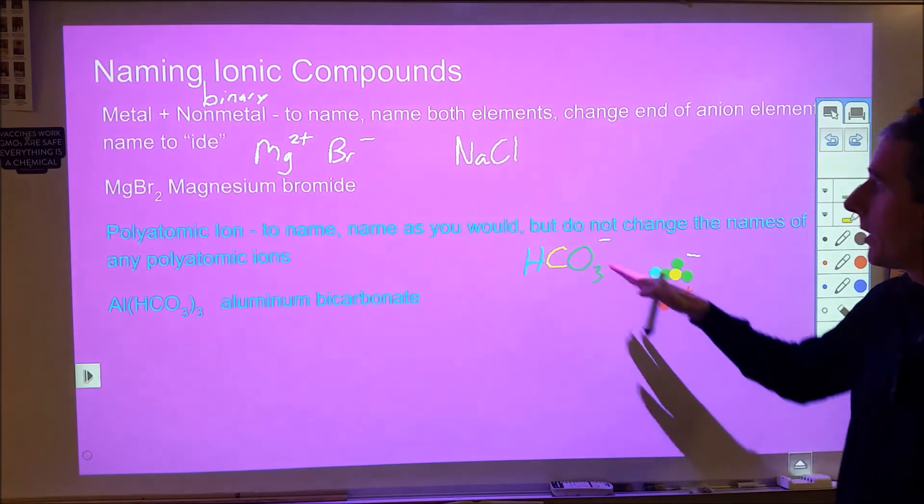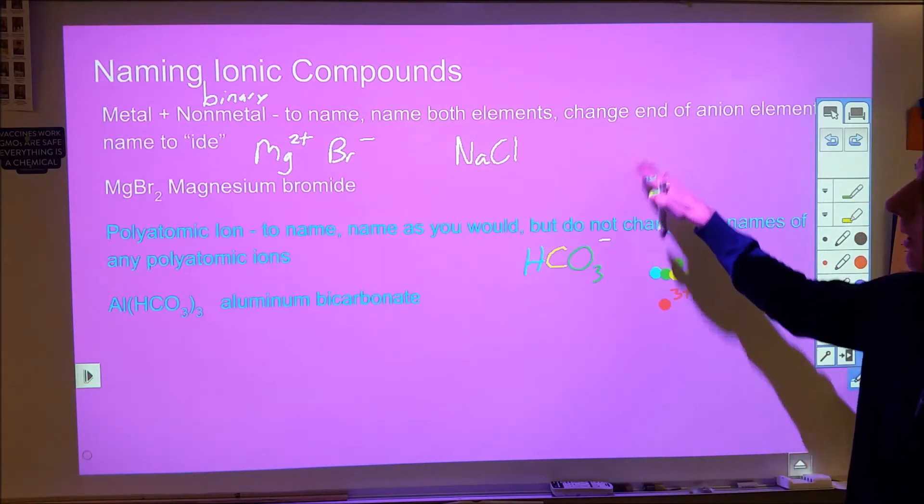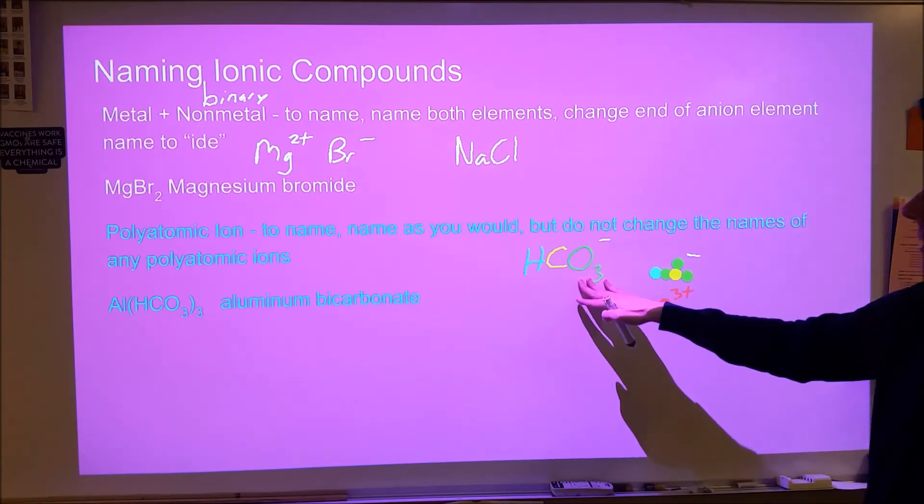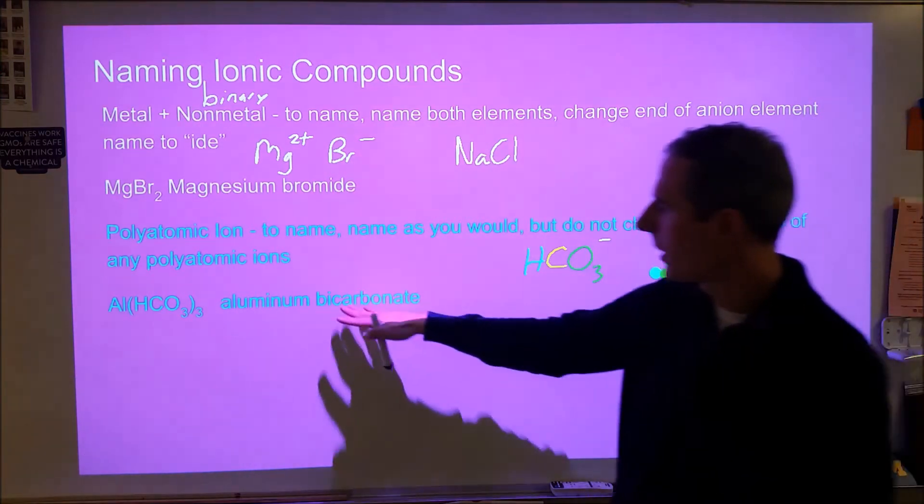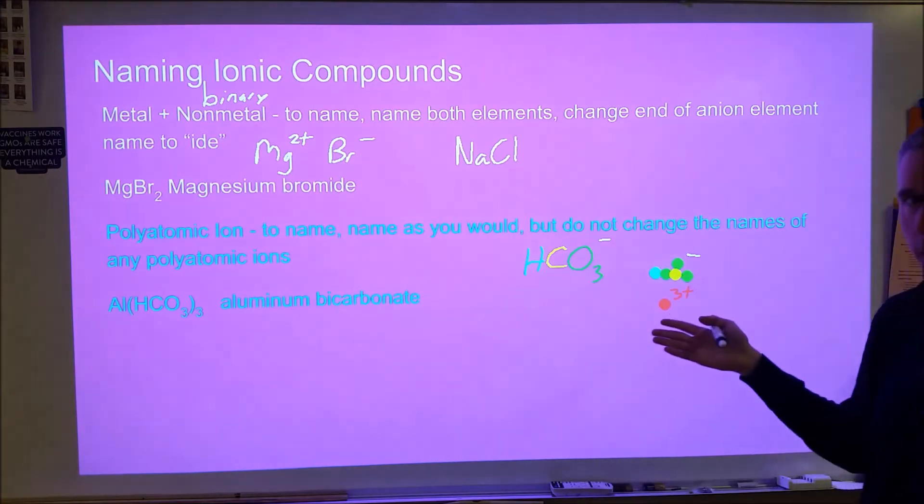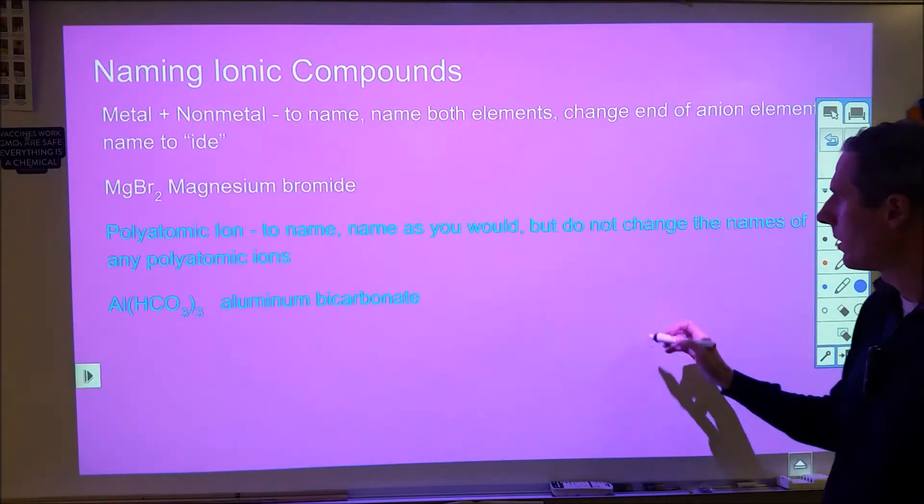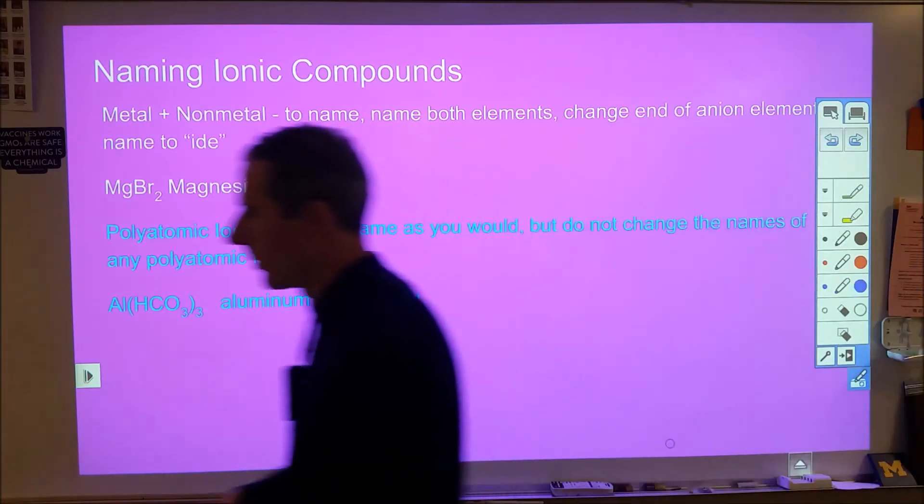Now for the naming, you do everything the same as what you would do up here. The only difference is you never change the name of a polyatomic ion when you're doing this naming system. So bicarbonate doesn't become bicarbonide, it just stays bicarbonate.